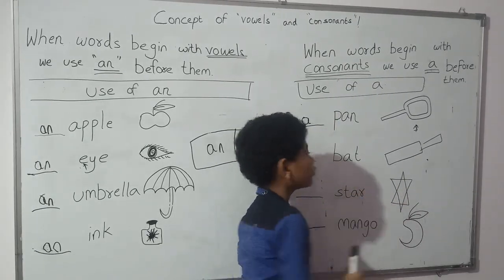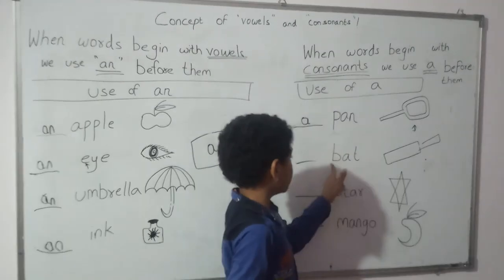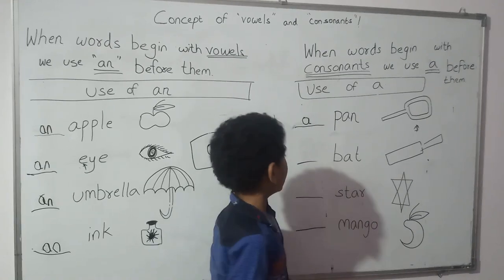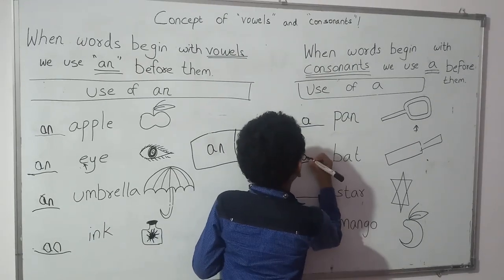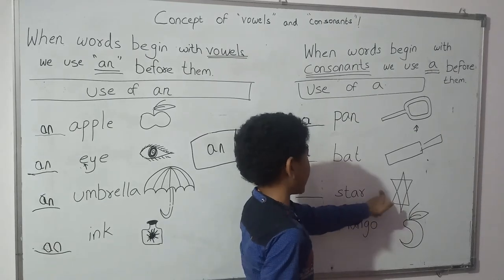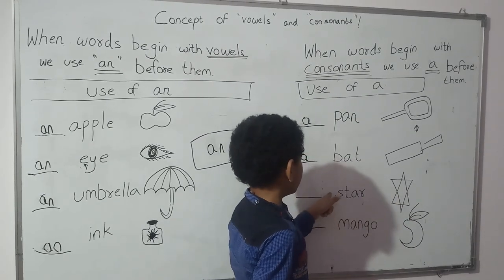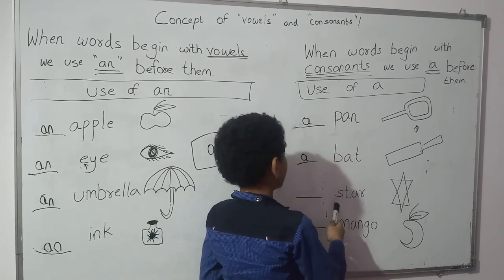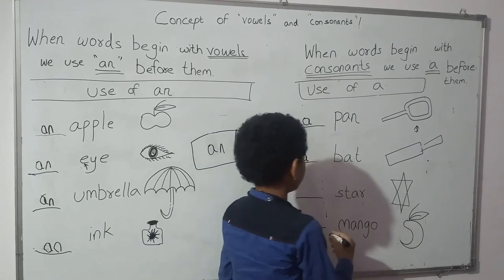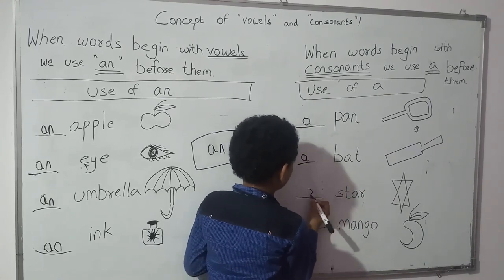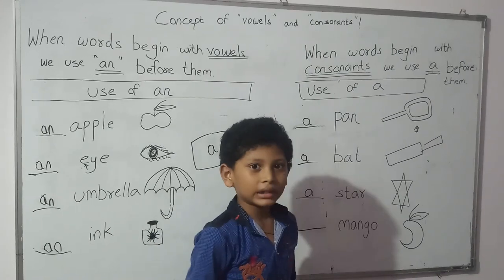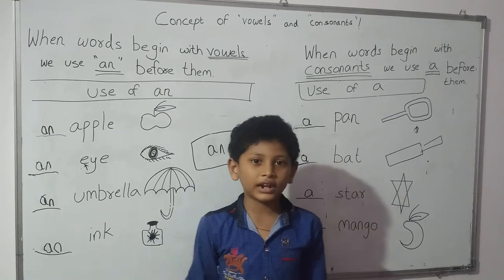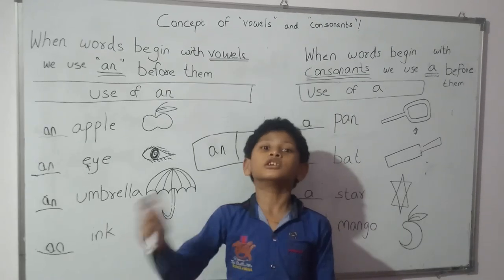You can't say AN PAN because PAN starts from a consonant, so we have to say A BAT. Now this is a STAR. STAR starts with S, so we have to write A STAR. When stars come out at night, we say A STAR.